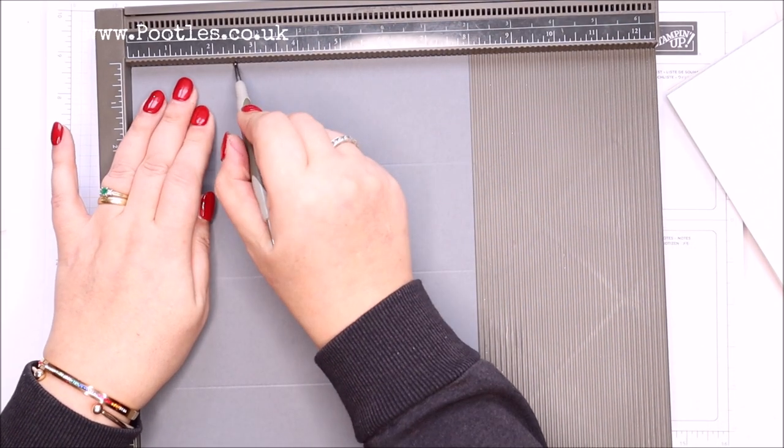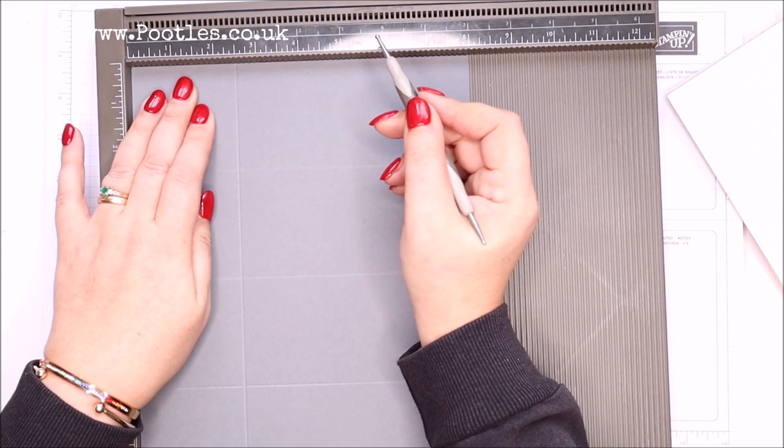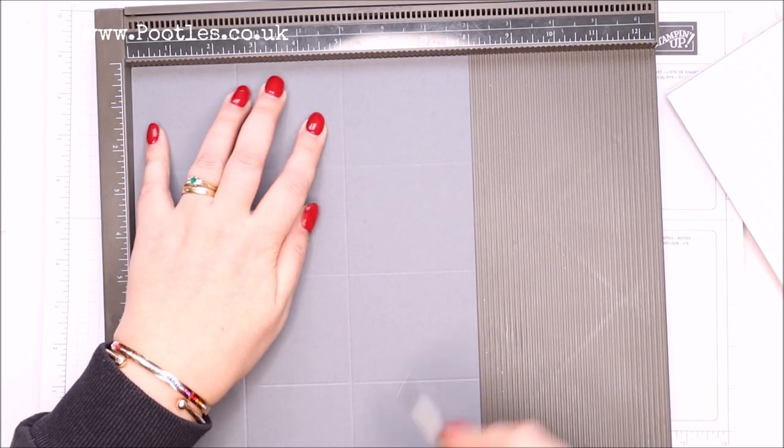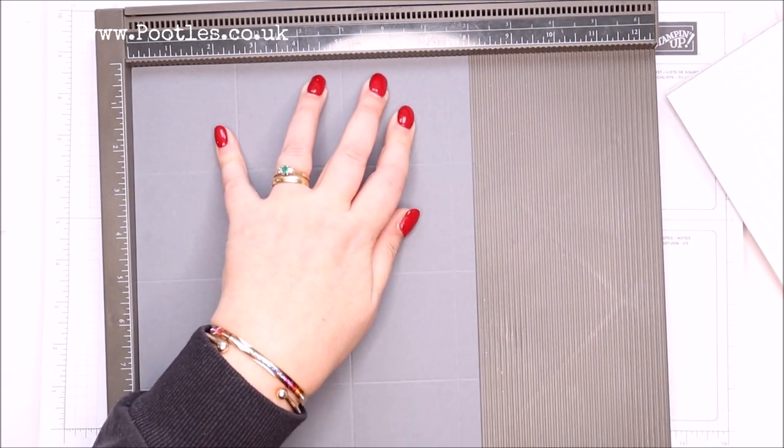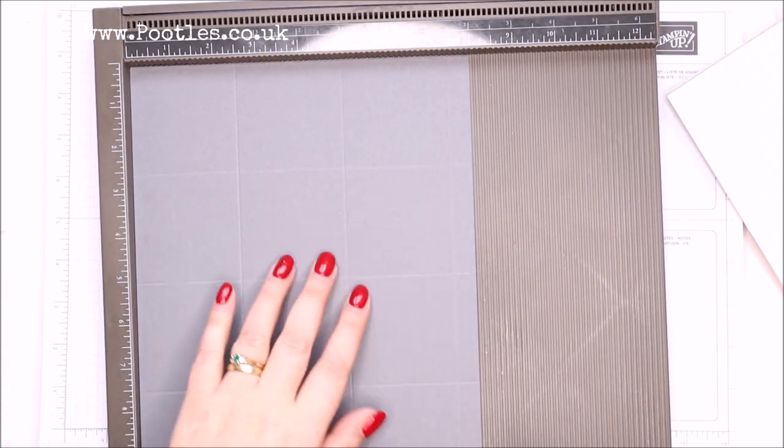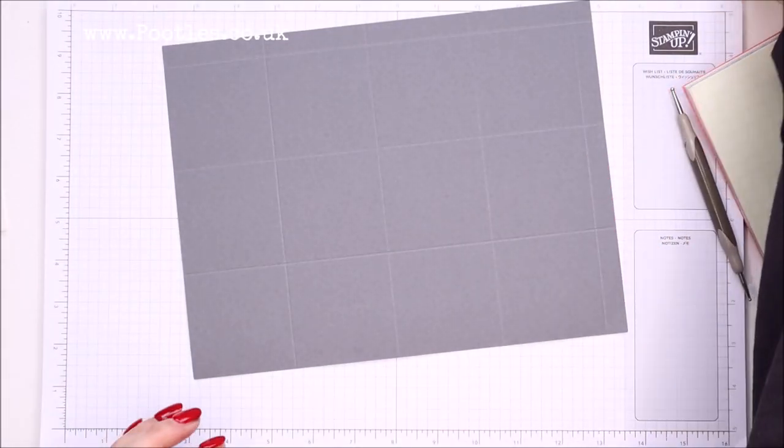On the short side, score it at two and a half, five, and seven and a half, and again in metric, six and a half, thirteen, nineteen and a half. Let's get this burnished.